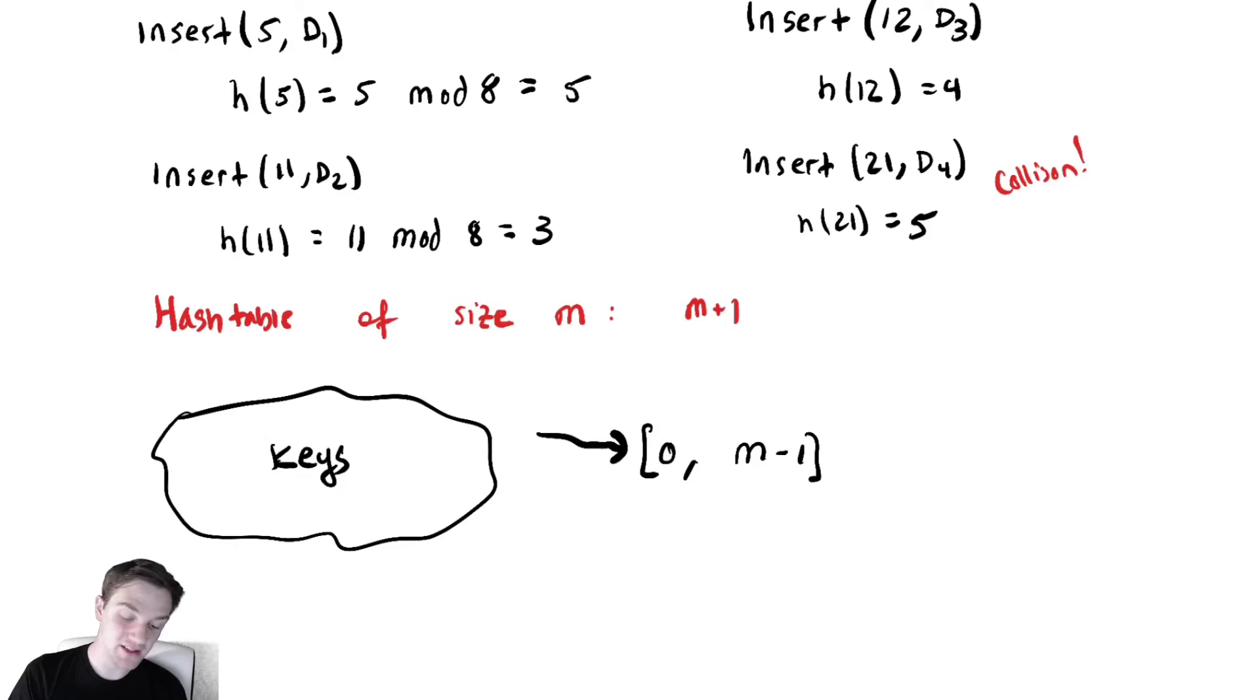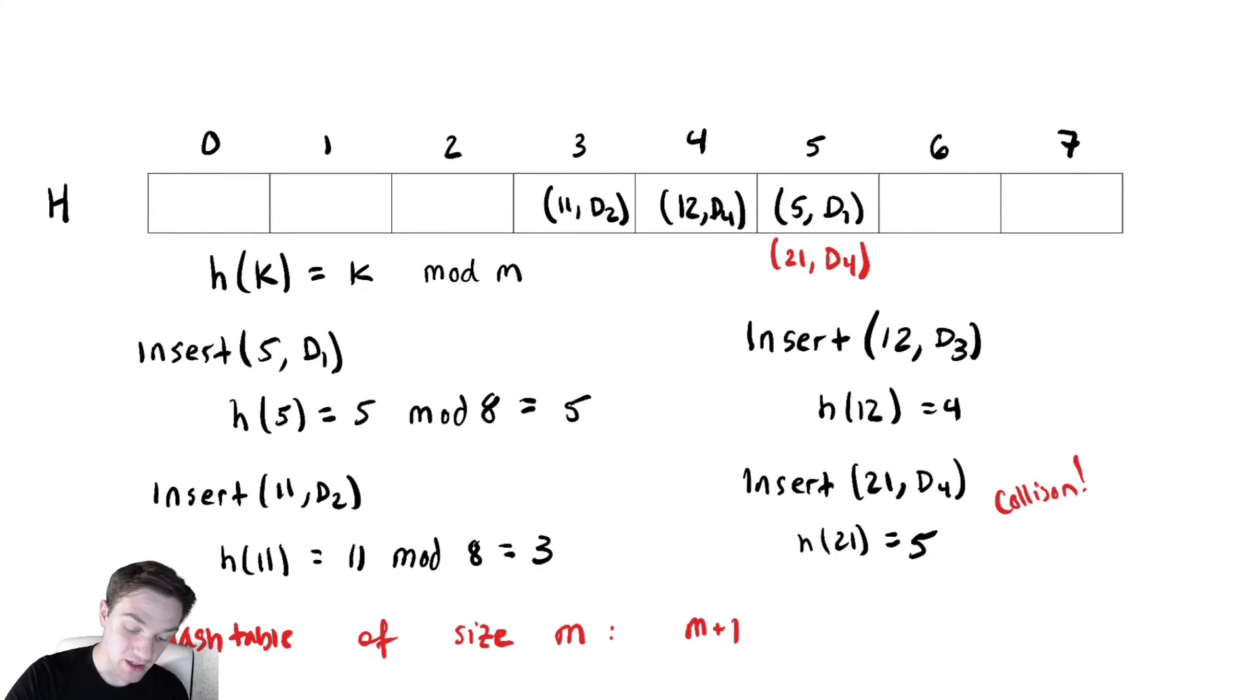There are a couple of ways we could do this. One idea might be, why not just also add it to that location? So we add on 21 comma d4 into that same location. That is a very reasonable way we could do this. So instead of storing just one key-value pair in the location, maybe we potentially store several. This is what we will call chained hashing.